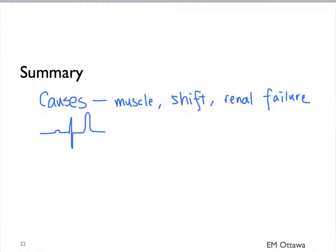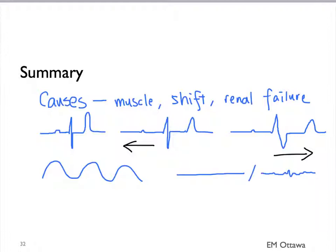In summary, we discussed the causes for hyperkalemia, whether there is muscle injury, a shift from the cells, or if the kidneys are not working. We talked about the ECG changes in patients, starting from a peaked T wave, to a prolonged PR interval and the disappearing of the P wave, a prolonged QRS, a sine wave, and to asystolic or VF arrest. We discussed the management including stabilizing the membrane, shifting potassium into the cells, and eliminating it from the body.